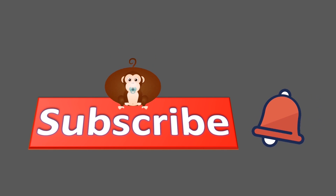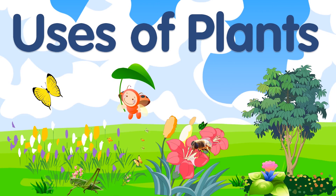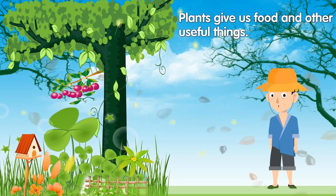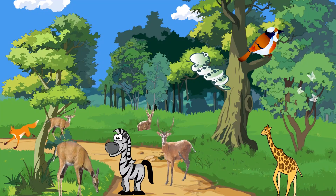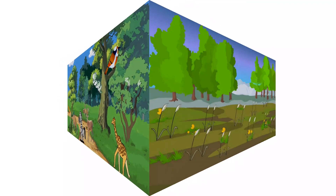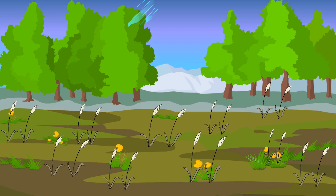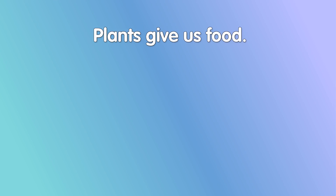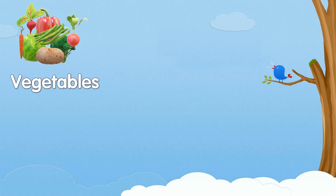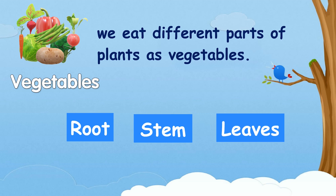Uses of plants. Plants are very useful to us. Plants give us food and other useful things. Plants are home to many animals, birds and insects. Plants give us oxygen and keep the air fresh and clean. Plants give us food like fruits, vegetables, cereals and pulses. We eat different parts of plants as vegetables, like root, stem, leaves, fruits and flowers.